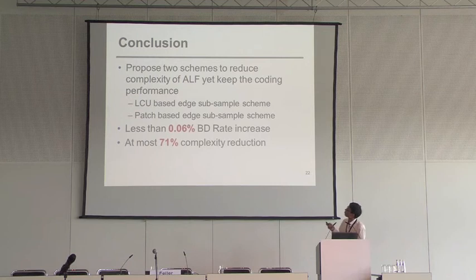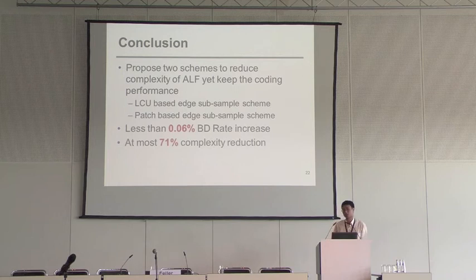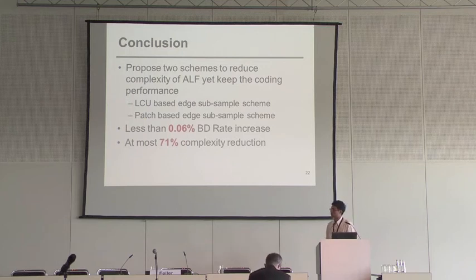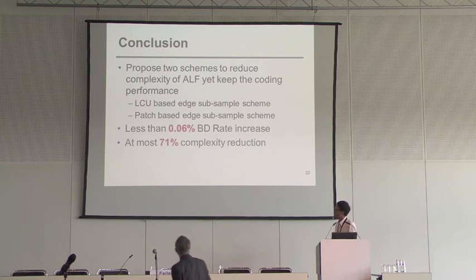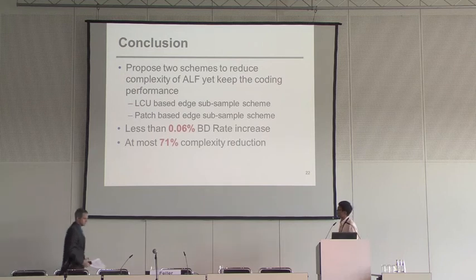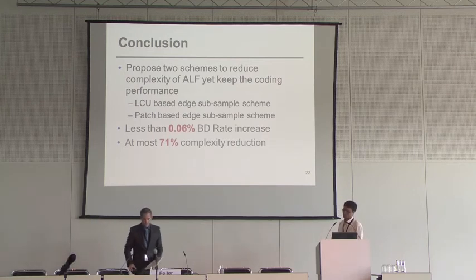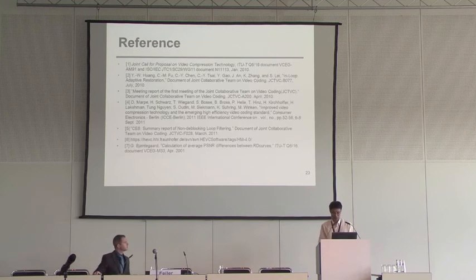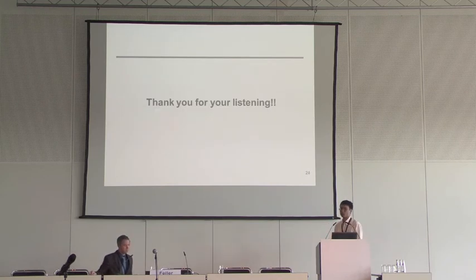In this paper, we propose two schemes to reduce the complexity of adaptive filter while still keeping the coding performance. Less than 0.06% BD-rate increase compared to the anchor HEVC reference software HM model is achieved. Compared to the current adaptive filter algorithm, at most 71% of complexity is reduced at a one-quarter sub-sampling ratio. Thank you very much.